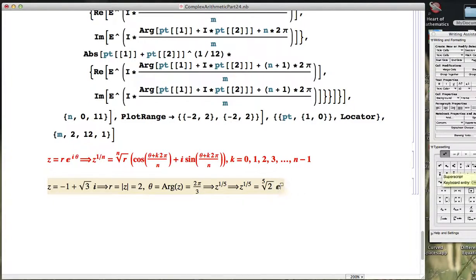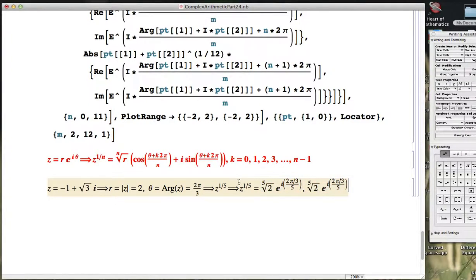So I'm going to write this as e to the i, and I have to put what theta is in here. It's 2 pi over 3, and n is 5. And I'm looking at these numbers as k varies from 0 to 4. So the first value of k equal to 0 is going to make this go away. Actually, let's put this on the next line here.